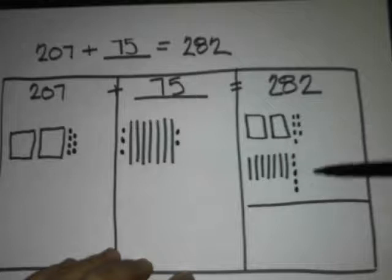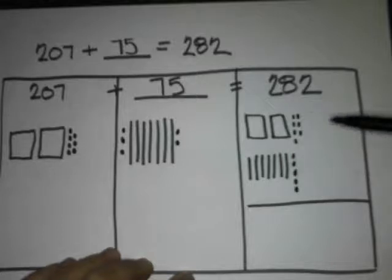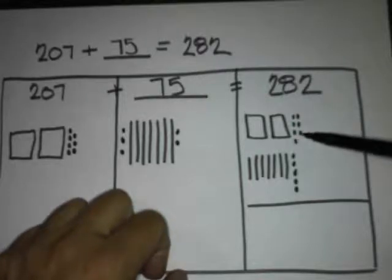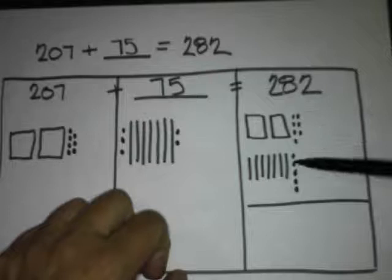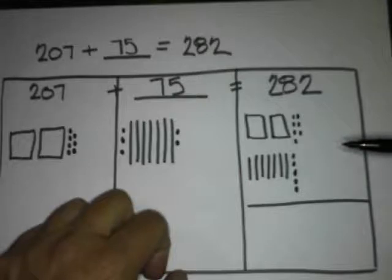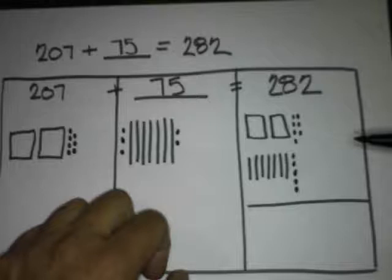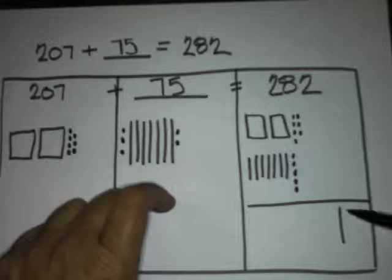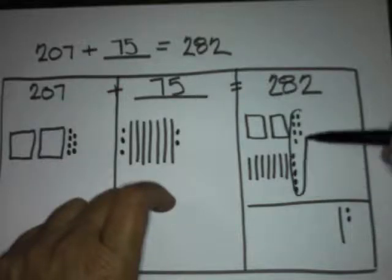If we add this together, look at these 1s. How many 1s do I have altogether? Let's count: 1, 2, 3, 4, 5, 6, 7, 8, 9, 10, 11, 12. What is the quick picture for 12? Cadence? 1 stick and 2 dots. Okay, so all of this right here, we just regrouped.